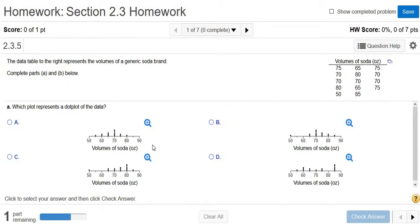So a dot plot is just a graph with lots of dots. For example, here you see there's one dot above the 55, so there's one soda that has 55 ounces. Here there's two dots above the 60, so there's two sodas that have 60 ounces.